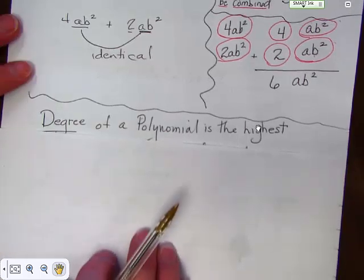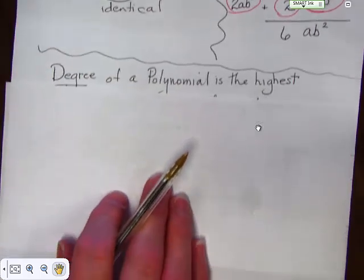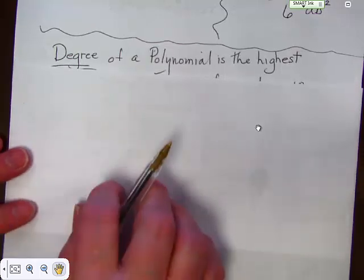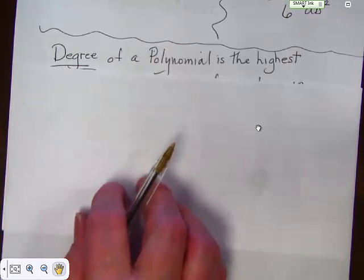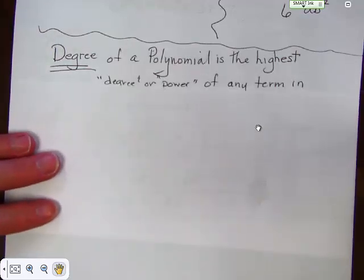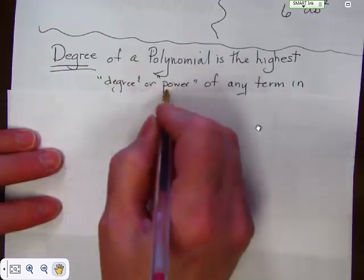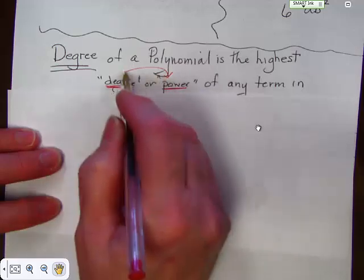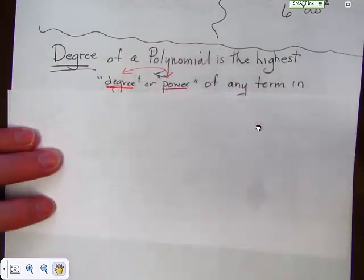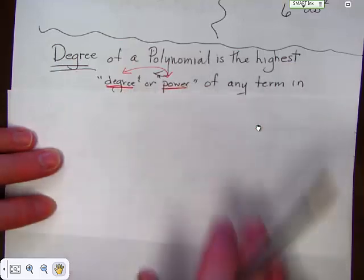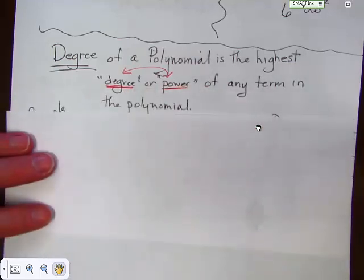Now, we want to talk a little bit about degrees of polynomial. And it doesn't have anything to do with the weather. Even though the weather today is very nice and sunny, I'm not talking about those kinds of degrees. The degree of a polynomial is the highest degree or power. Degree and power both kind of are the same thing in this particular situation. The degree of a polynomial is the highest degree or power of any term in the polynomial.